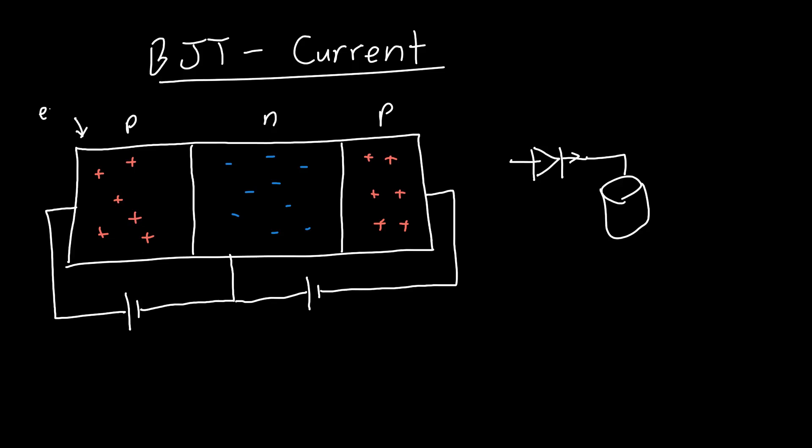This is just acting like our bucket that's collecting all of the holes that get swept across these regions. For that reason, we call this the emitter, this the base, and this the collector, because the emitter is emitting holes across the base into the collector, which collects them. Let's also draw in these depletion regions.